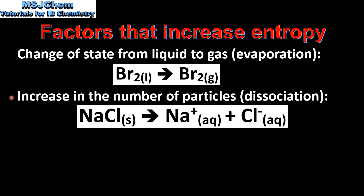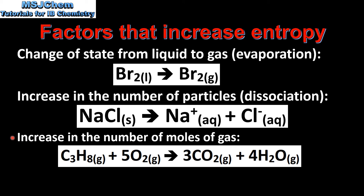The next example is an increase in the number of particles, which is dissociation. When one mole of solid ionic compound dissociates into two moles of ions, we have an increase in entropy. Next is an increase in the number of moles of gas. In the reactants we have six moles of gas, in the products we have seven, therefore we have an increase in entropy.